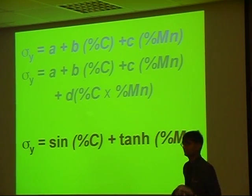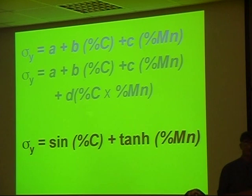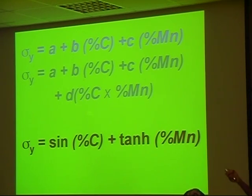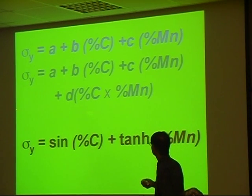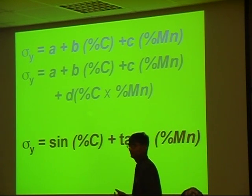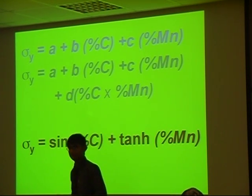You might actually write an equation like this. So the problem with this method is that we don't know what this relationship should be. Of course, if we knew what that relationship should be, then we would not use empirical equations.